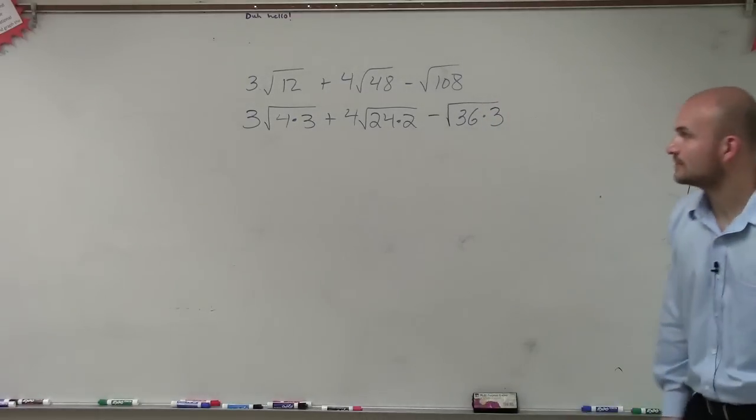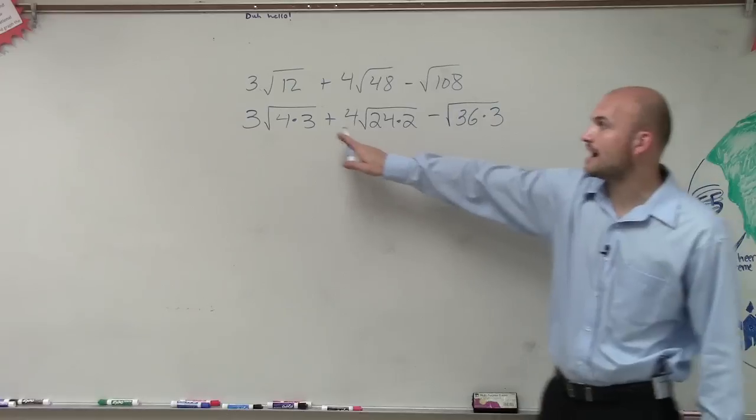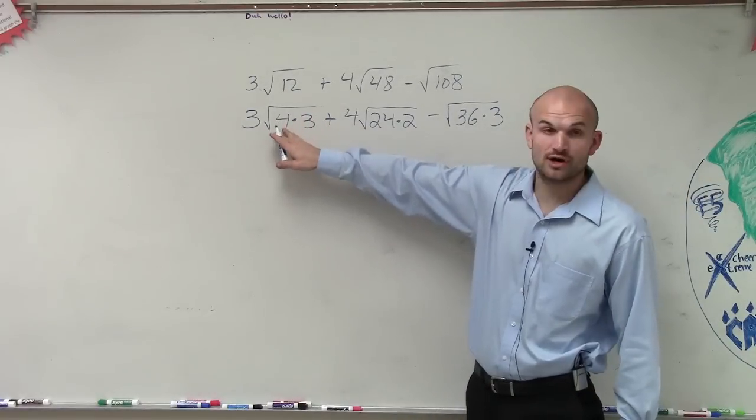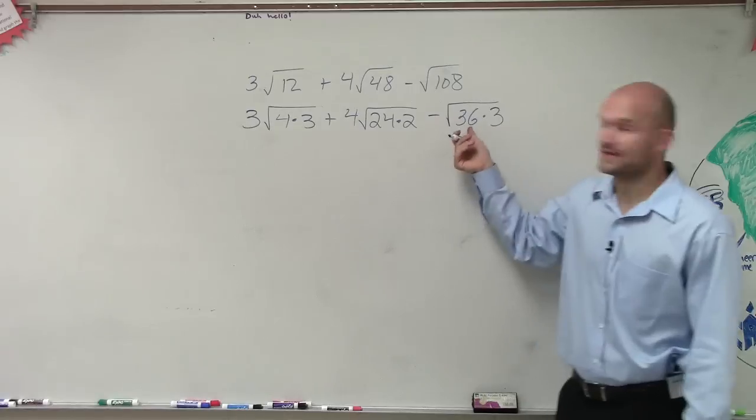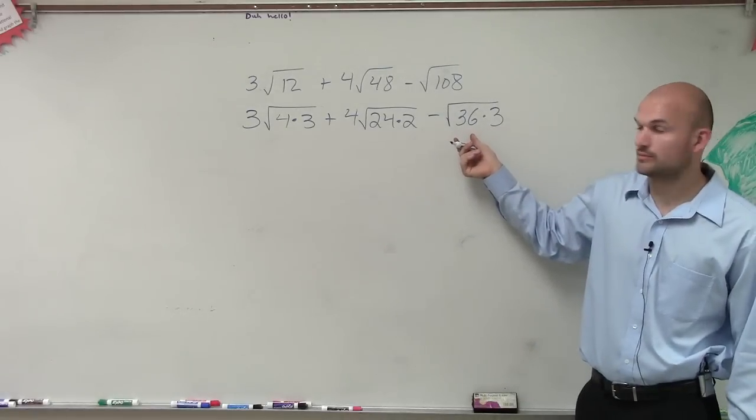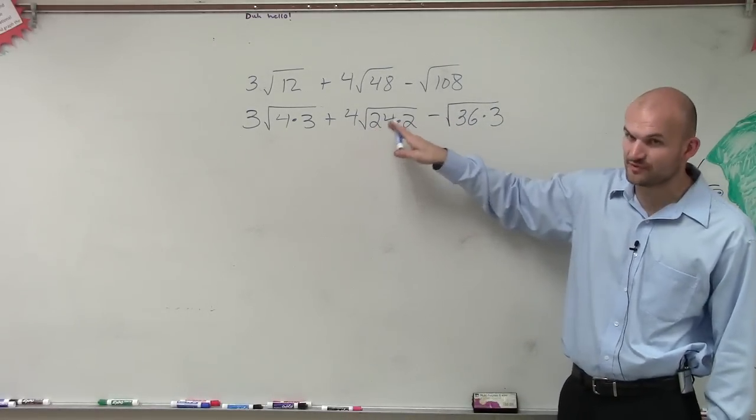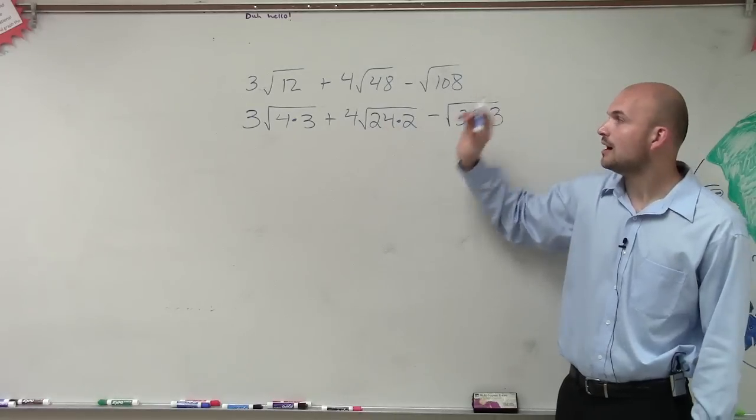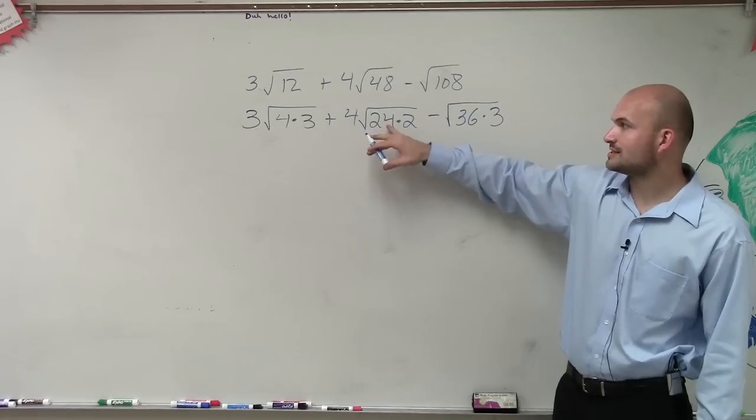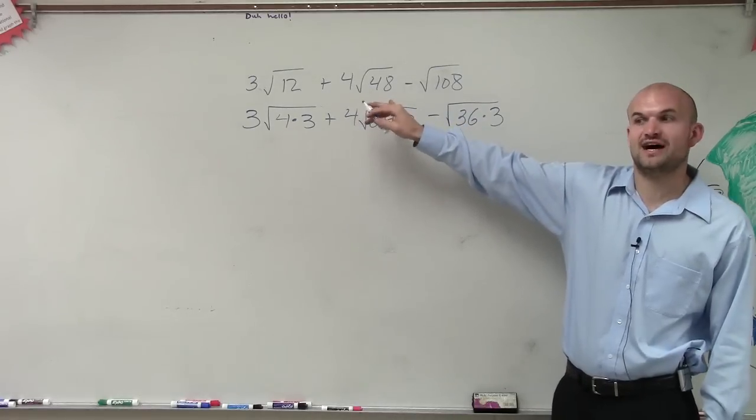OK. The one change I would do, 24 times 2 is—so now we look at this. 4 is perfect, because that's a square number. Square root of 4 is 2. This is perfect. Square root of 36 is 6. Now, there's nothing wrong with 24 times 2, because we can simplify still 24 times 2. However, let's take a look at this. Is there another square number, though, that divides into 48?